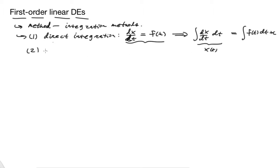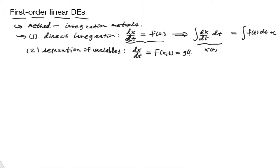The next method we learned was that of separation of variables. That form is a differential equation written as f(x, t) = g(t) · h(x). In this form, we integrate: ∫ 1/h dx = ∫ g dt, and then go from there. You can see the videos on that in our other playlist videos.